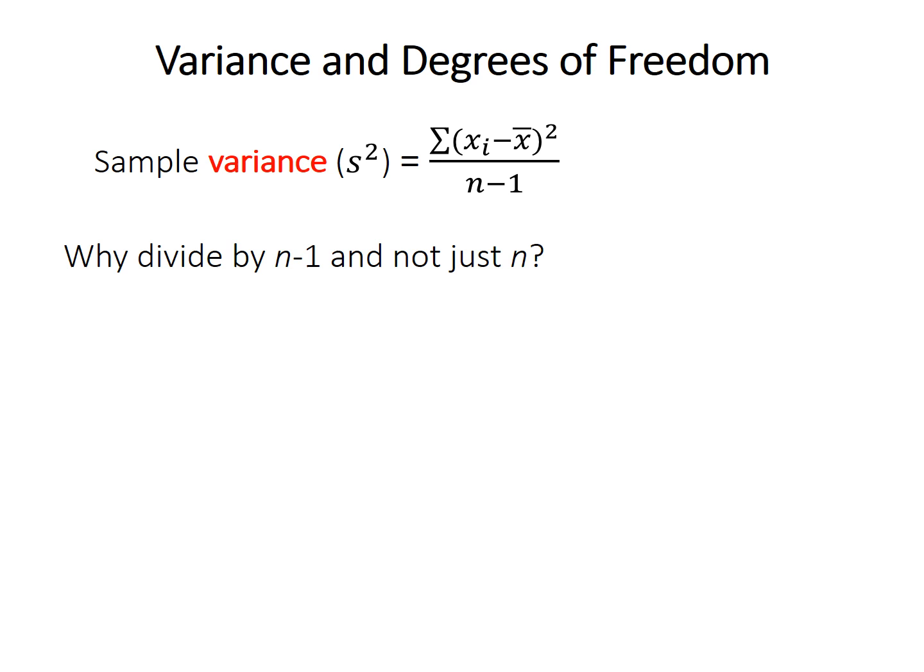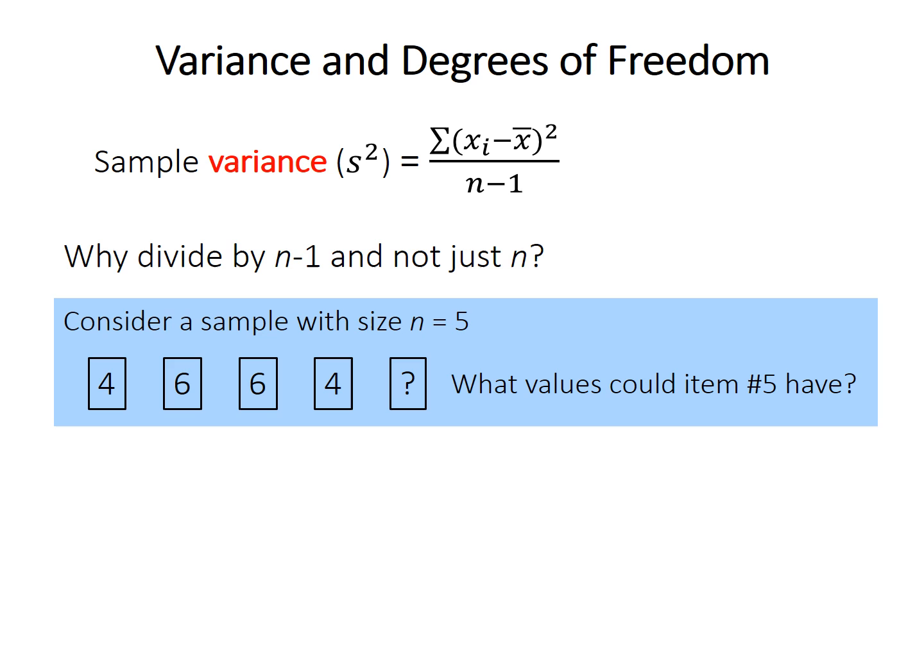This is related to something called the degrees of freedom, and that might be easiest to illustrate with an example. Let's consider this small sample here of five observations. You know the first values are 4, 6, 6, and 4, and so what could the fifth value be? Well, it could be anything. It's probably something like 4 or 6 if you're extrapolating, but it could be 4.5, 4.672, it could be 15. There's no constraints on that fifth value.